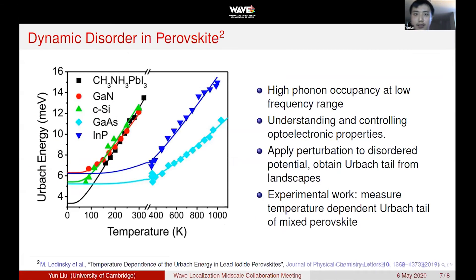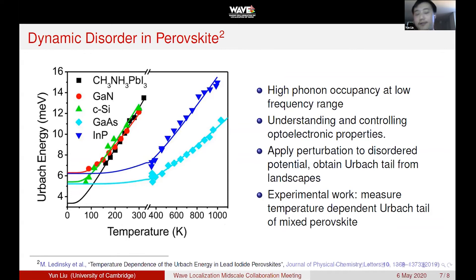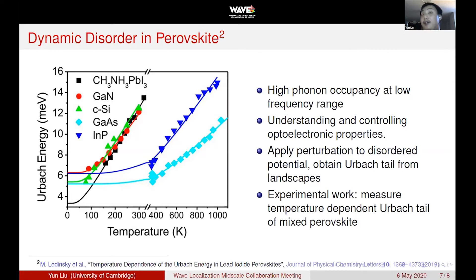A more interesting physical problem in perovskite is the dynamic disorder. The figure on the left shows the Urbach energy as a function of temperature. Extrapolating this Urbach energy, we can see that it goes to very, very small values as temperature approaches zero — which is very surprising given the strong disorder present in the system. After solving the static disorder part, we plan to apply our knowledge to the dynamic disorder in perovskite — for example, by applying perturbation to the potential and obtaining the perturbation in the landscape. There is also parallel experimental work measuring the temperature-dependent Urbach energy of mixed perovskites, and we hope to tie theory and experiment together.